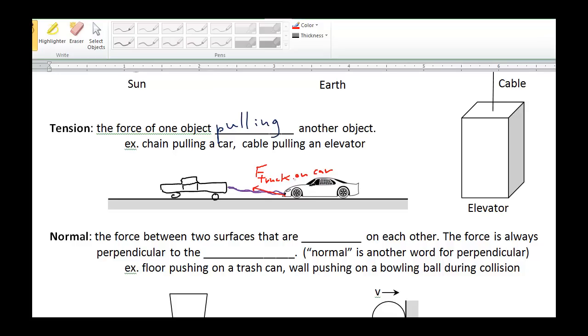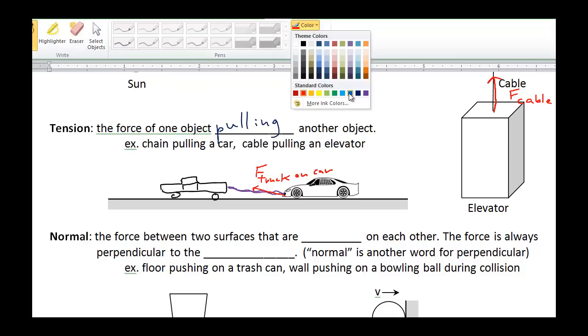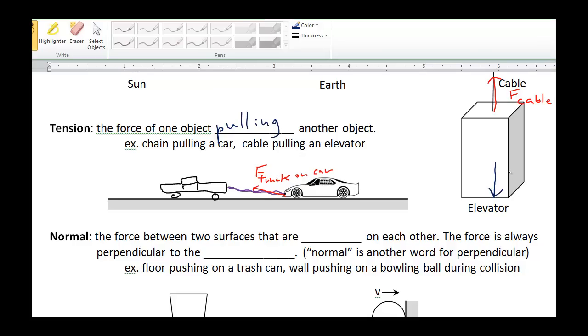And if there was too great of tension in the chain, the chain may break. We can also see this with an elevator. An elevator has two main forces acting on it to allow its motion. It has an upward force of tension, which is the force of the cable pulling up on the elevator.